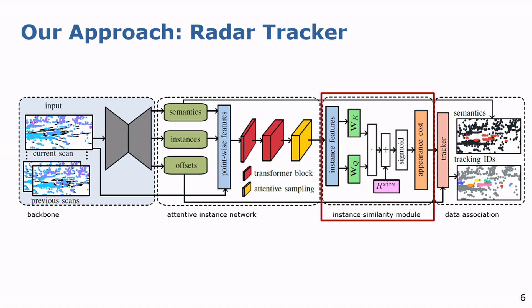We want to have a low tracking cost for the same instance based on the features and a high cost for different tracks. Hence, the appearance cost depends on the attentive similarity between the tracks. Our final tracker then combines the appearance and the geometric features to assign the tracking IDs within the data association.